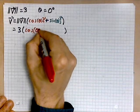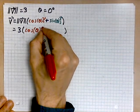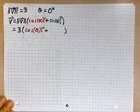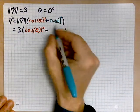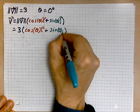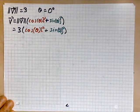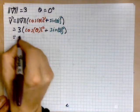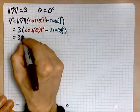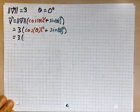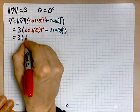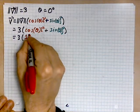Cosine of zero, i, plus sine of zero, j. Let's simplify this. So, the 3 stays. The cosine of zero degrees is one. So, what's left now is just one i.